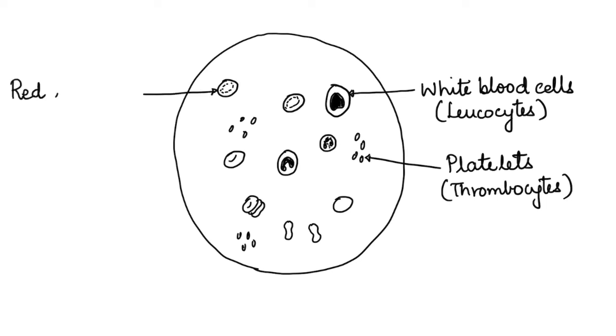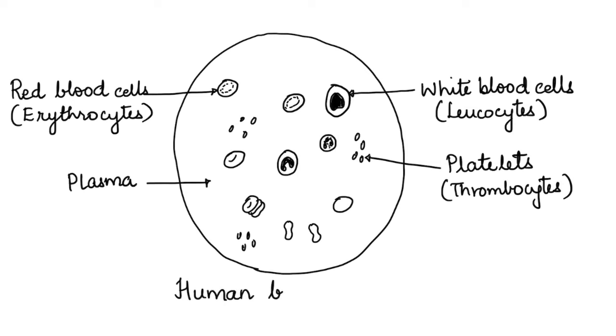Next, label the biconcave cells as red blood cells or erythrocytes, and the space as plasma. This completes the drawing and labeling of the blood smear. Once done with the labels, do not forget to mention the title as human blood smear.